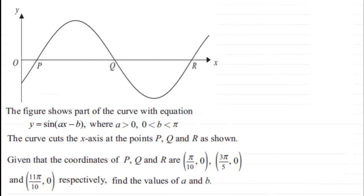Hi. Now here we've got a question based around transformations of graphs. We've got here the figure shows part of the curve with equation y equals sine of ax minus b, where a is greater than zero and b is a value between nought and π radians.